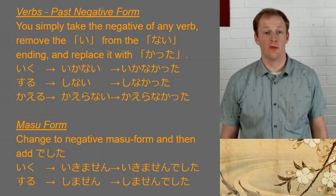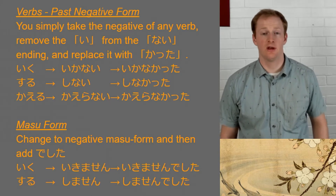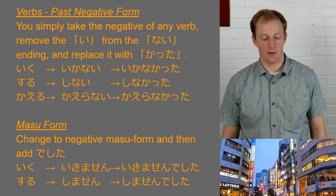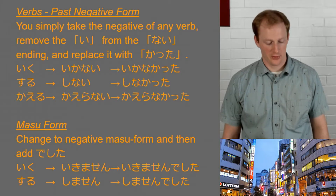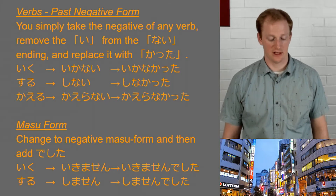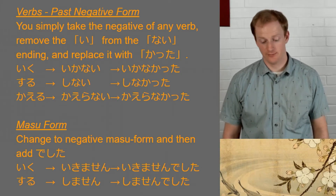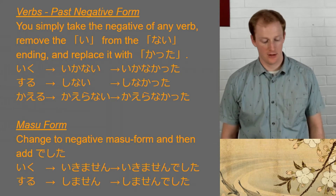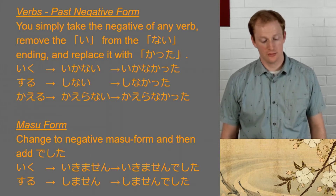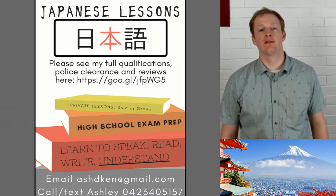For the masu form negative past, we do the same kind of thing: make the negative masu form first, then add deshita. So iku → ikimasen → ikimasen deshita. And suru → shimasen → shimasen deshita.